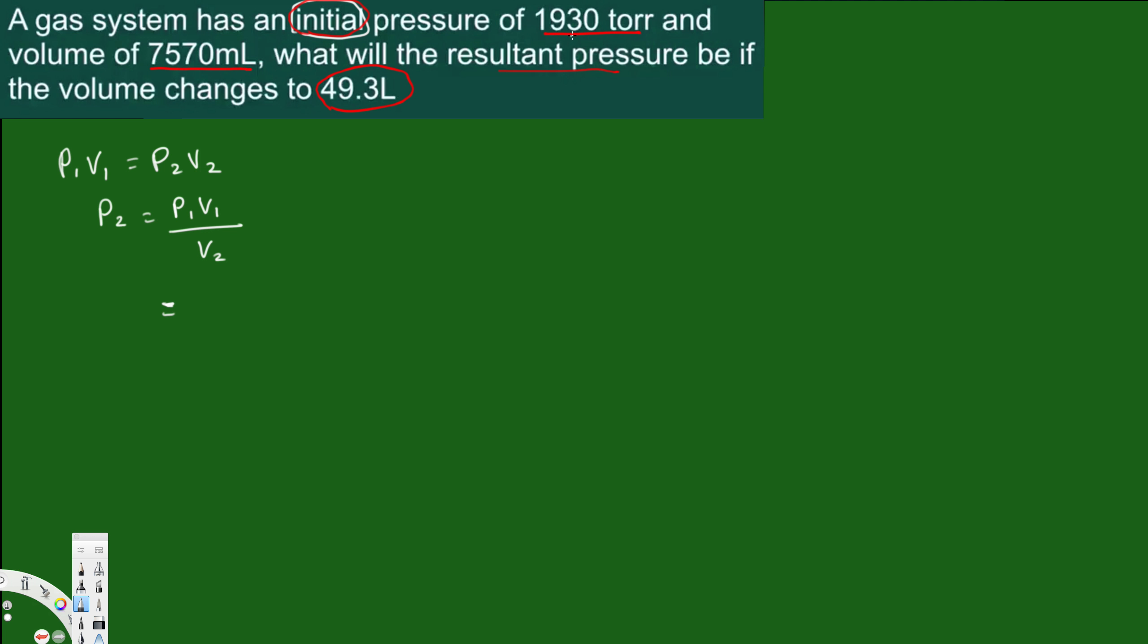P1 is the initial pressure, that is 1930 torr, multiplied by V1, that is 7,570 milliliters. And if you notice, one is in milliliters, one is in liters. So we better keep both of them in the same unit because we want them to cancel each other, because we are trying to find pressure, right?